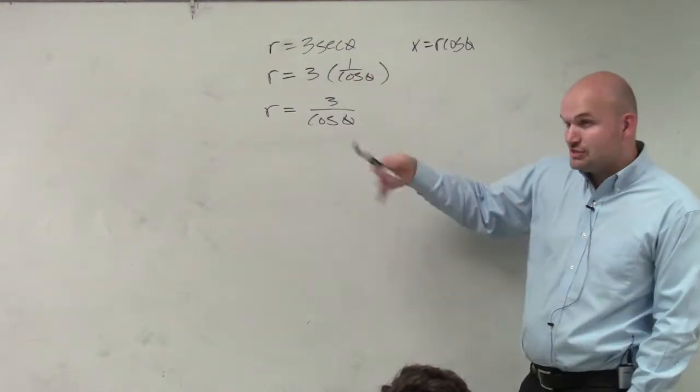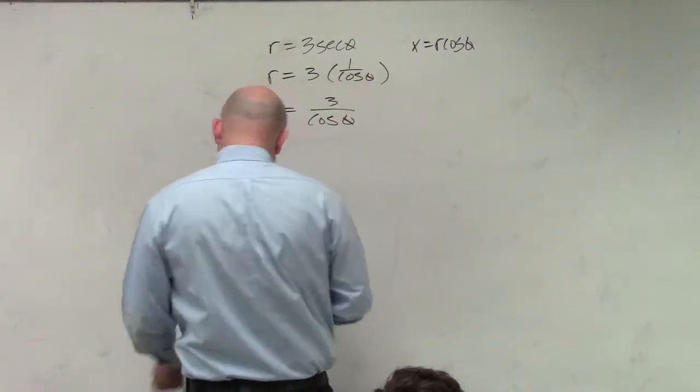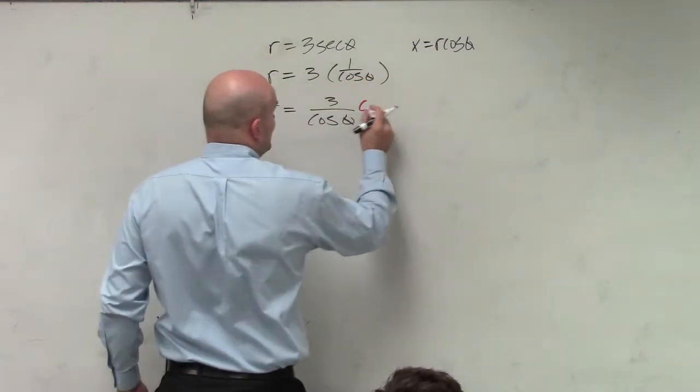So again, if I want to write this in terms of X's, what would happen if I multiplied by a cosine on both sides? I would definitely get rid of the cosine of theta on the right side.